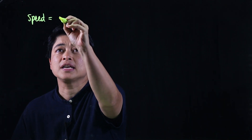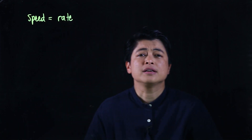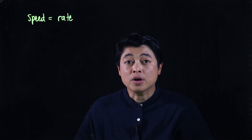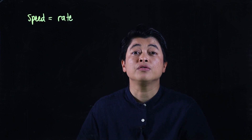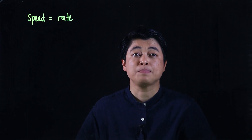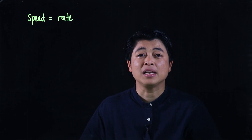Module four consists of two chapters, chapter seven and chapter eight. Chapter seven is about speed. We'll start with lesson one, which is speed and distance. The book uses the word speed, but other books will use the word rate — they mean the same thing. Since I'm teaching from the book, I will follow what the book uses, which is speed.